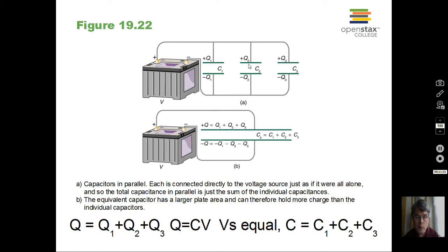There's a total charge that's stored in this system. That's the sum, Q1 plus Q2 plus Q3. I can replace each Q with C times V. The parallel equivalent C here times the voltage across that parallel equivalent.